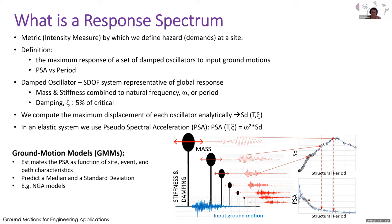I can't start talking about response spectra without giving a definition. A response spectrum is PSA versus period. It's a metric — an intensity measure. Right now it's the best intensity measure we have. It defines the demand at your site, and it's defined as the maximum response of a set of damped oscillators to your input ground motions — spectral acceleration versus period. It's pseudo-spectral acceleration.